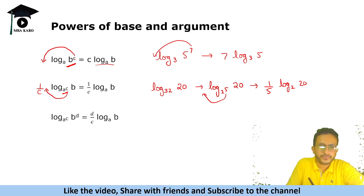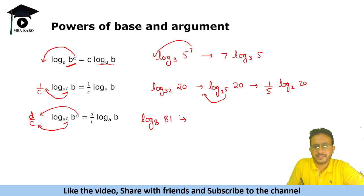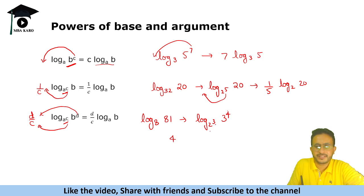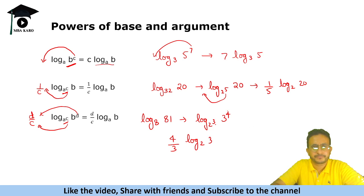Now what if there is a power in both the base and the argument? In that case, the argument's power goes to the numerator and the base's power goes to the denominator, giving (d/c)·log_a(b). For example, log base 8 of 81 can be written as log of (2^3) base and (3^4) argument. The 4 goes to the numerator and 3 to the denominator, giving (4/3)·log base 2 of 3.